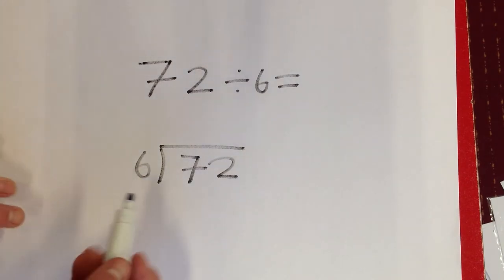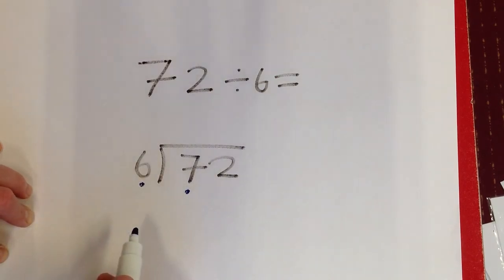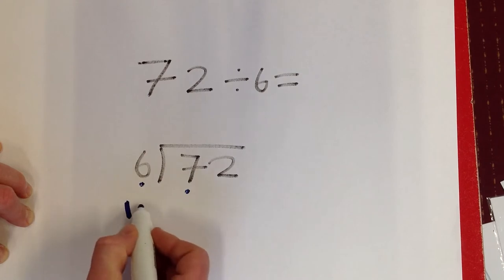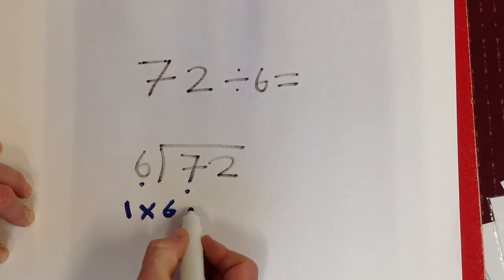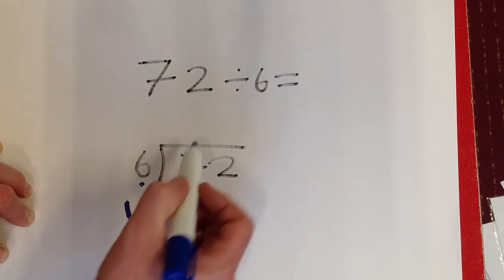So first, I'm going to see how many 6s go into the left-hand number. I know 1 times 6 equals 6. I know that 6 is going to go into 7, no problem. So I put my 1 up here.